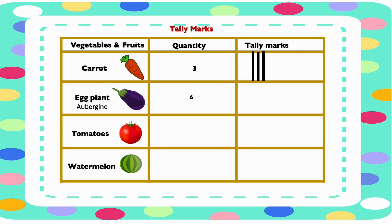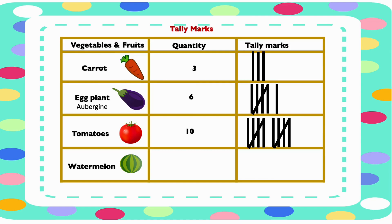They bought six eggplants, represented by one group of five and one straight line. They bought ten tomatoes, represented by two groups of five. And they bought one watermelon, which is represented by one straight line.